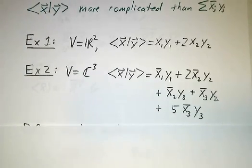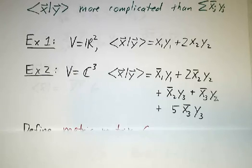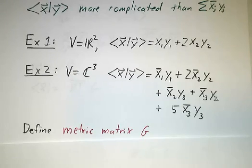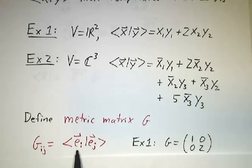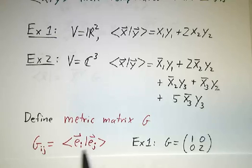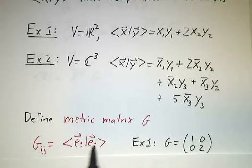And we want to figure out how to make sense of bras and kets in this setting. The key is something called a metric matrix. The metric matrix is what you get when you take the inner product of the basis vectors. If we have the standard inner product, then the metric matrix would just be the identity matrix, because each vector dotted into itself gives you 1, and each vector dotted into a different vector gives you 0. But if you have a non-standard inner product, then this matrix is not going to be the identity.